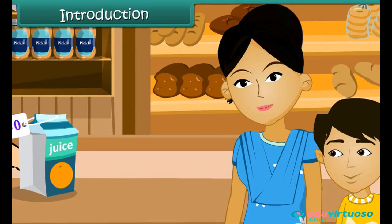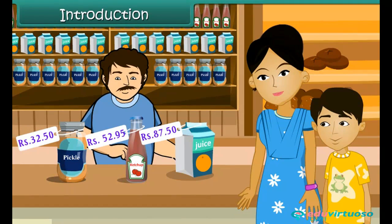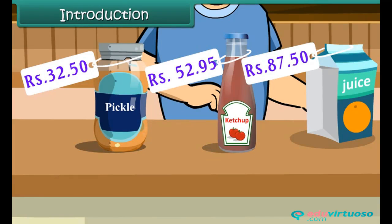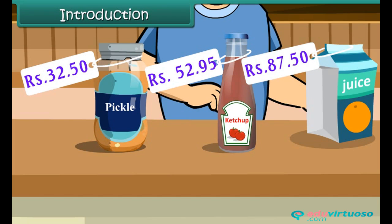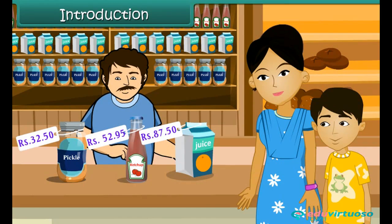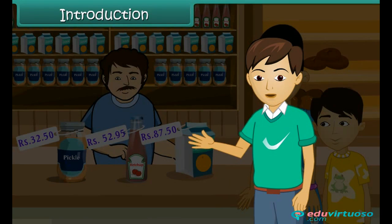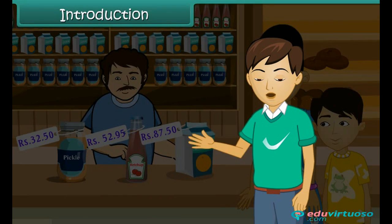Your mother goes to the market. She wants to buy a bottle of ketchup priced at rupees 52.95, juice priced at rupees 87.50, and pickles priced at rupees 32.50. All the prices are decimal numbers. How much money should your mother pay the shopkeeper? To find that out, you need to add these three decimal numbers. In this lesson, you will learn to add and subtract decimal numbers and understand their application in real life.